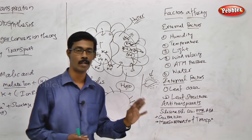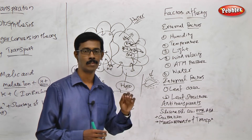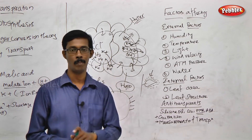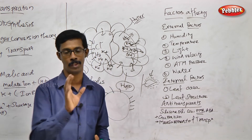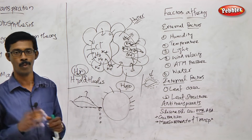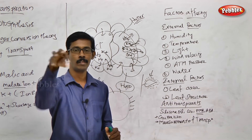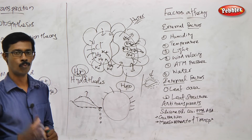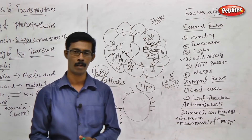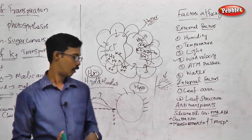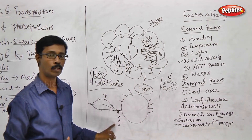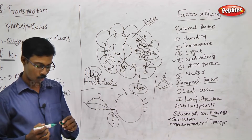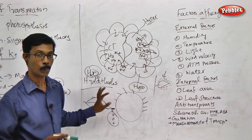Hydathodes perform a process called guttation. While transpiration is loss of water as water vapors, here water goes outside as liquid. Guttation is driven by root pressure. Excess water due to root pressure causes the hydathodes to leak. The water contains minerals, so if you taste the water droplets from leaf edges, it is saltier. Hydathodes are going to perform the process called guttation, and guttation is related to root pressure and ascent of sap.